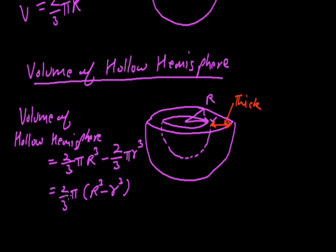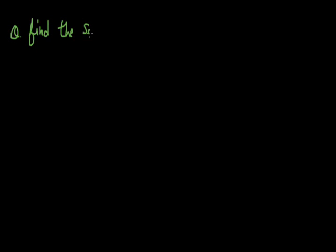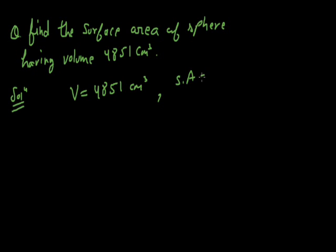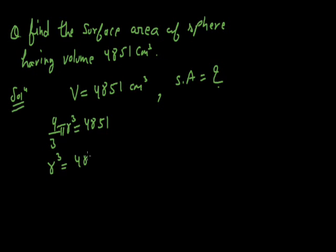Now let's start the problems based on sphere and hemisphere. Problem 1: Find the surface area of a sphere having volume 4,851 cm³. We are given the volume is 4,851 cm³ and we have to find the surface area. The formula for volume is 4/3 π r³ = 4,851, so r³ = 4851 × 3/(4π).